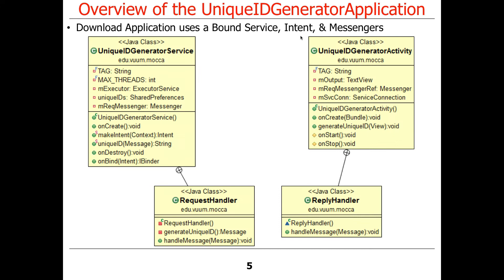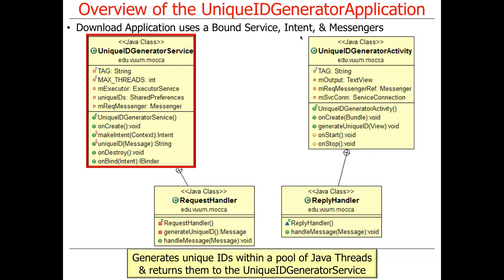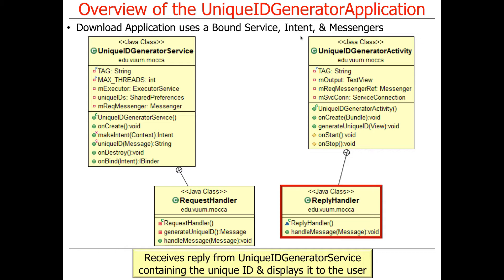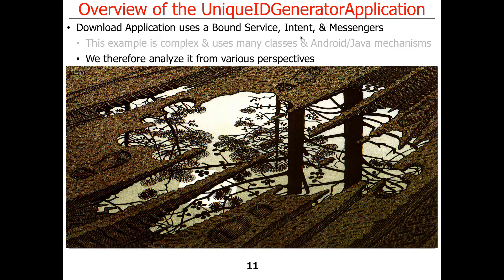Here are the main parts of the application. There's a unique ID generator activity — that's what interacts with the user. You basically click a button and that starts the processing in the background. It uses the unique ID generator service to do its thing; that's what actually encapsulates the heavy lifting. The heavy lifting is done by a request handler, which runs in the background in a pool of threads. When the request handler is done, it sends back the result via a messenger to a reply handler, which displays it to the user. All the applications follow a very similar canonical structure.